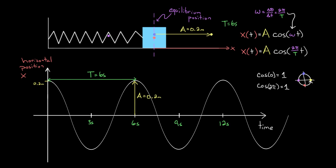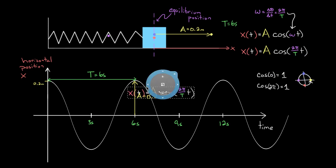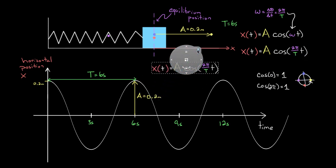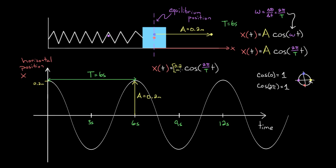To make this less abstract: for this particular choice of amplitude and period, the function representing this graph—instead of amplitude, we'd plug in 0.2. So 0.2 meters times cosine—we wanted cosine because it starts at a maximum, and this graph started at a maximum.